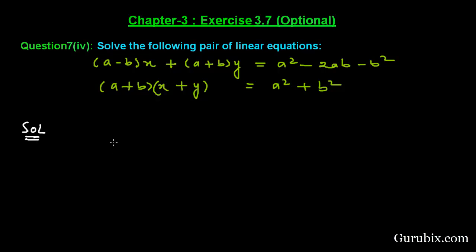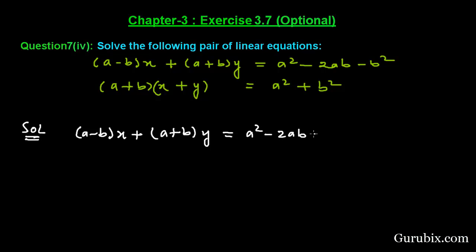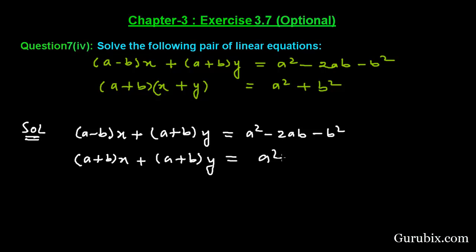Let us see how to solve this question. First of all, we shall collect the given pair of equations. That is: (a minus b)x plus (a plus b)y equals a squared minus 2ab minus b squared. We can expand the second equation by multiplying (a plus b) with x and (a plus b) with y, giving (a plus b)x plus (a plus b)y equals a squared plus b squared. This is equation one and this is equation two.